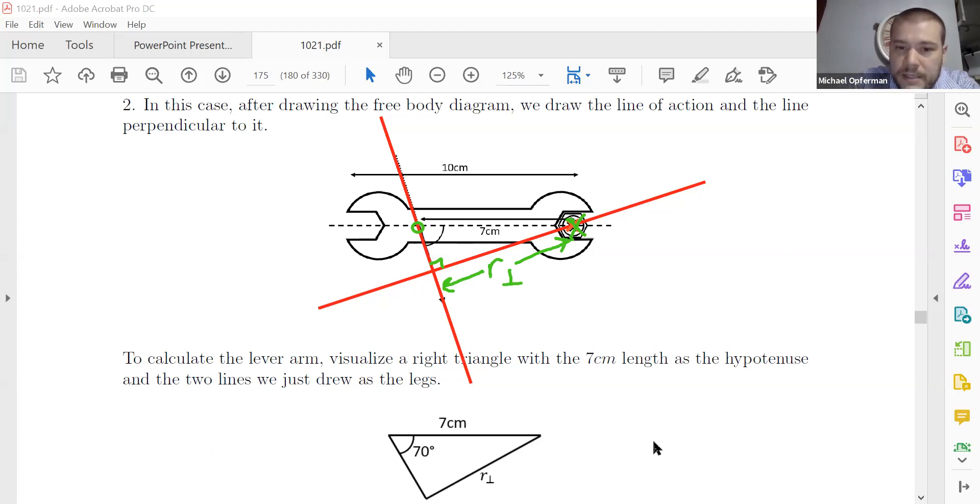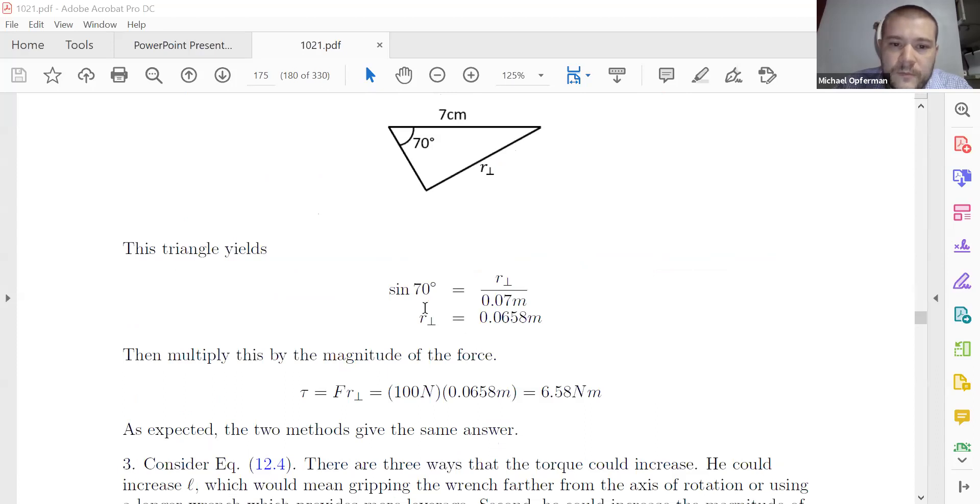R perpendicular is this side of the triangle, and the hypotenuse of the triangle is actually going to be this horizontal side. So the hypotenuse of the triangle is known to be seven centimeters. We're looking for R perpendicular. So it's going to be sine of 70. That's the same sine of 70 that popped up in the force component based method. So in this basically, in the other method, you have to do a breaking vector into components problem. In this method, you have to do a geometry problem to get the same information out.